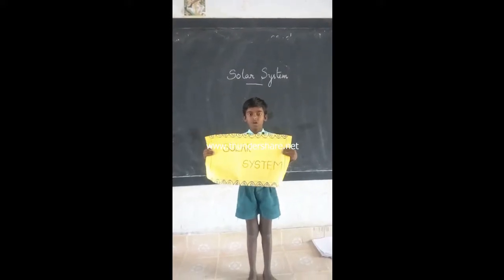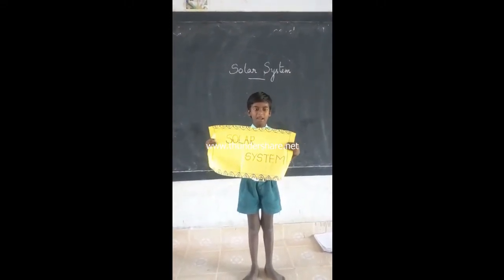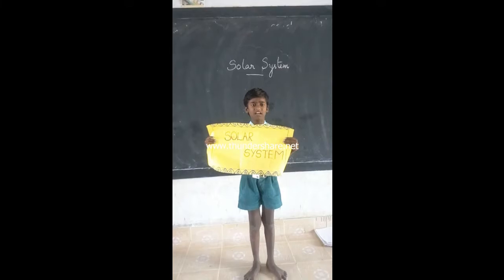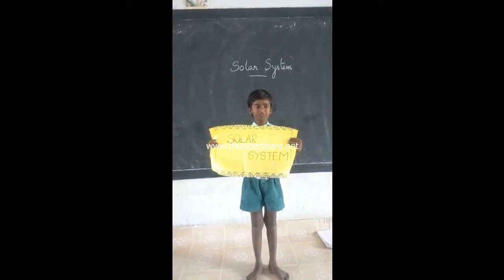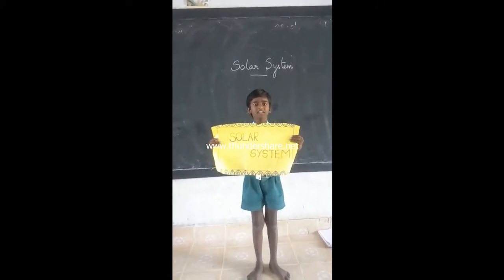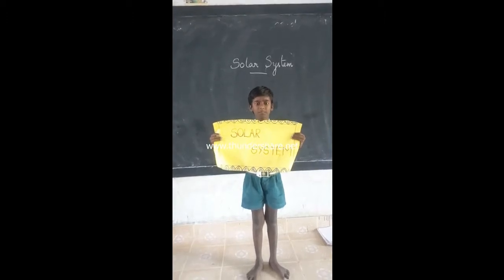The planets revolve around the sun at different distances, in different orbits. This is called the Solar System.